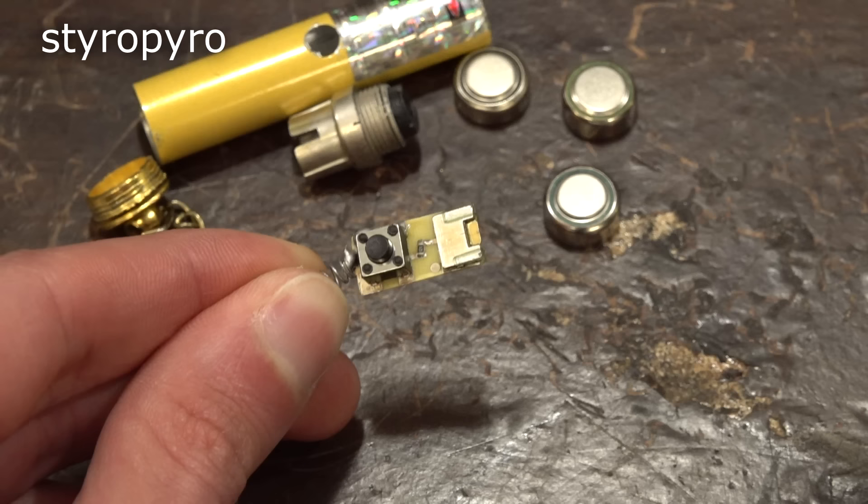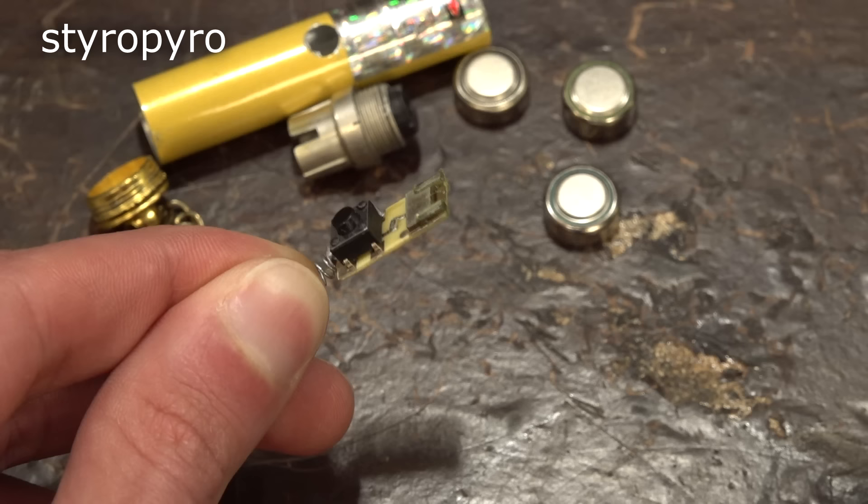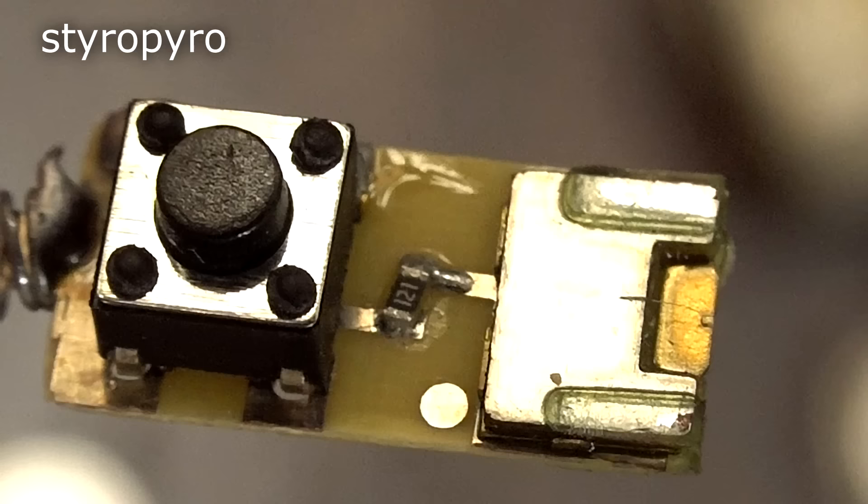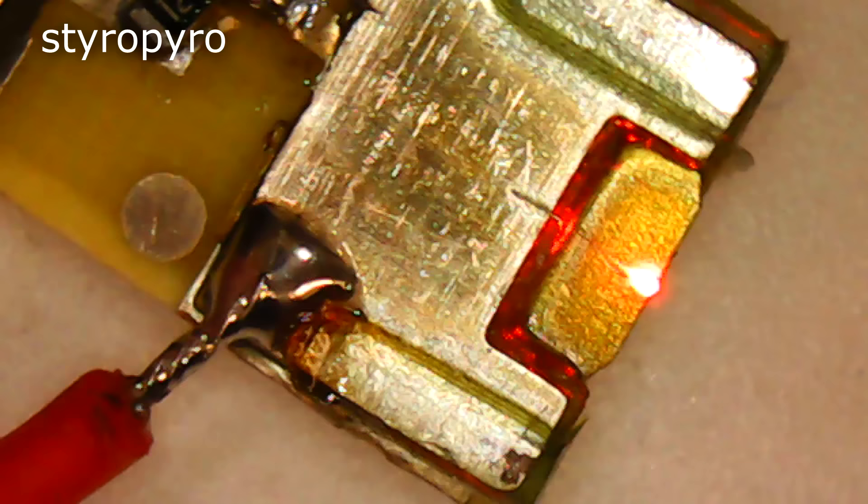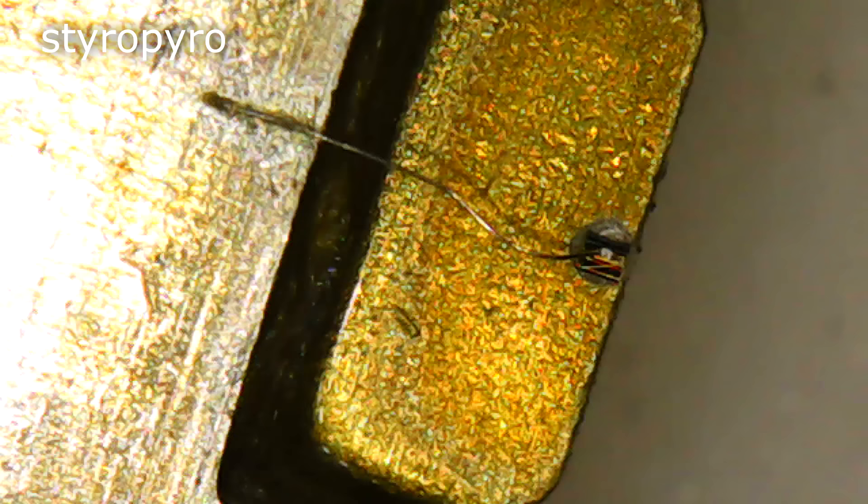I went ahead and took apart that laser pointer, and I think I found the problem. To put it lightly, there are literally children out there that would have done a better job designing this. The driver circuit is literally just a switch and resistor. No filter cap, let alone any sort of current regulation. I think the reason they can get away with this is due to the high internal resistance of these little button cells. That means that it may have actually been my bench supply that killed it, even though the voltage was set correctly. Now, notice that the bare laser diode is mounted directly on the circuit board here with very little in terms of heat sinking. A powerful laser diode would fry itself in seconds in a configuration like this, so that only means that this puny laser diode was never capable of much power in the first place.